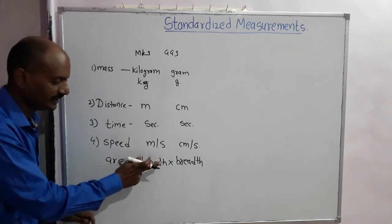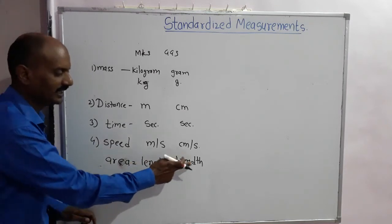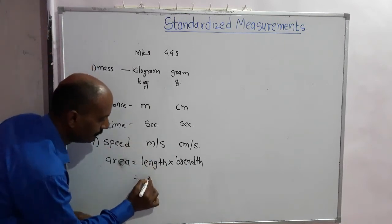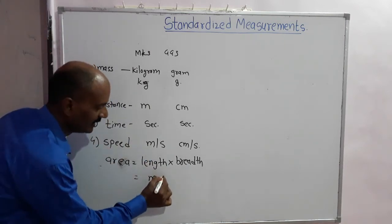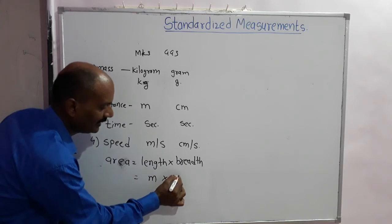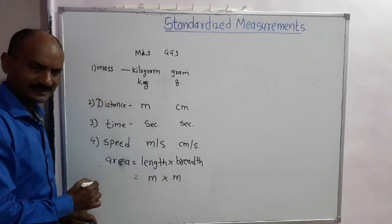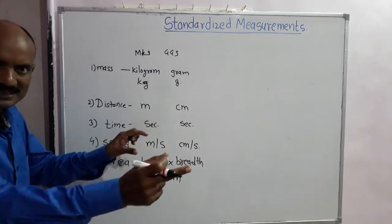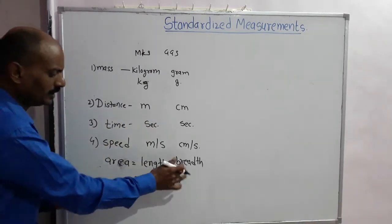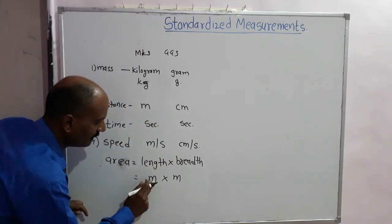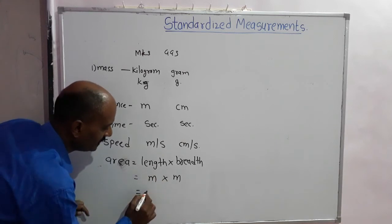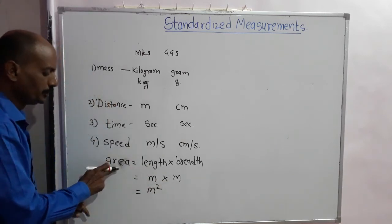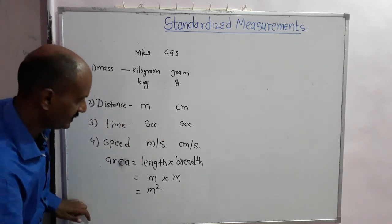Area is a physical quantity whose unit is derived from length and breadth. In the MKS system, since length is in meter, the unit of area is meter squared (m²).